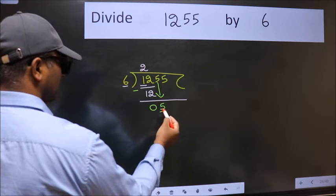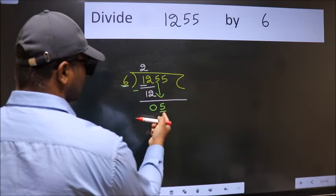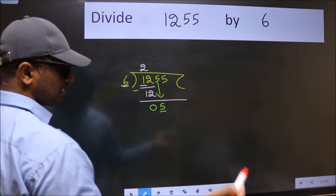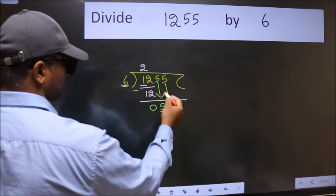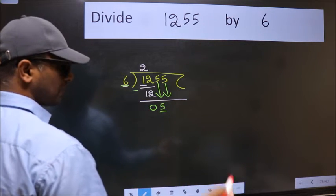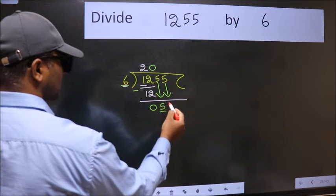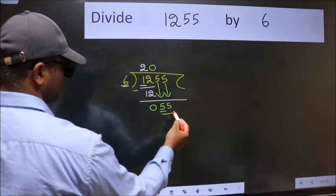Now here we have 5 and here 6. 5 is smaller than 6. So we should bring down the second number. And the rule to bring down the second number is put 0 here. Then only we can bring this number down. So, 55.